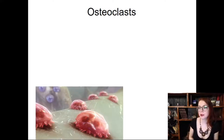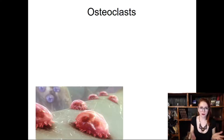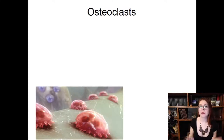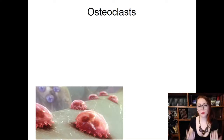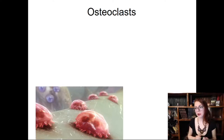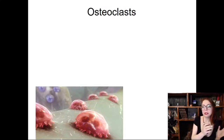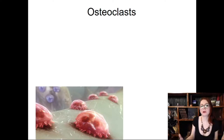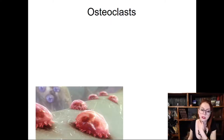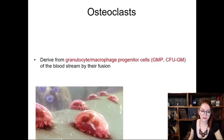We now have to talk about the opposite process: how bone matrix is degraded and why we need bone-resorbing cells. First, bones are sources of calcium — if we need calcium for the bloodstream, we resorb it from our bones. The second function is bone remodeling: to replace immature primary bone tissue with mature secondary bone tissue, we need to resorb some bone matrix. For this purpose we need osteoclasts, whose two main functions are calcium mobilization and bone remodeling.